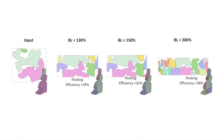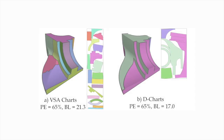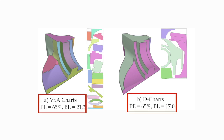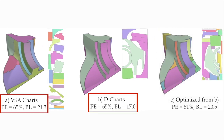Here are some more examples of our packing efficiency optimization with a range of boundary length constraints. Prior methods that accounted for packing efficiency during chart computation used compactness as a proxy for packing efficiency. As this example shows, having more compact charts often does not result in better efficiency.